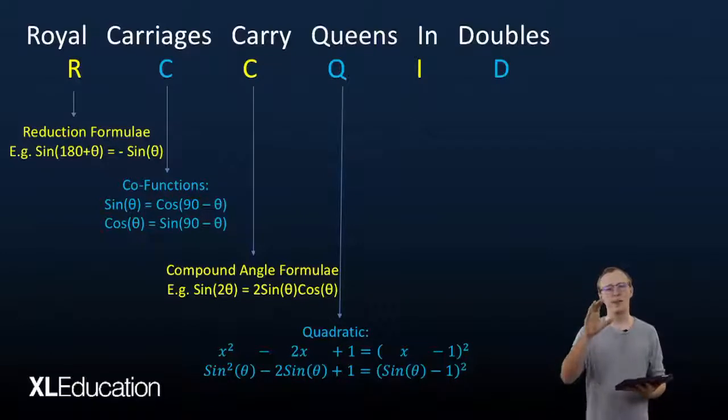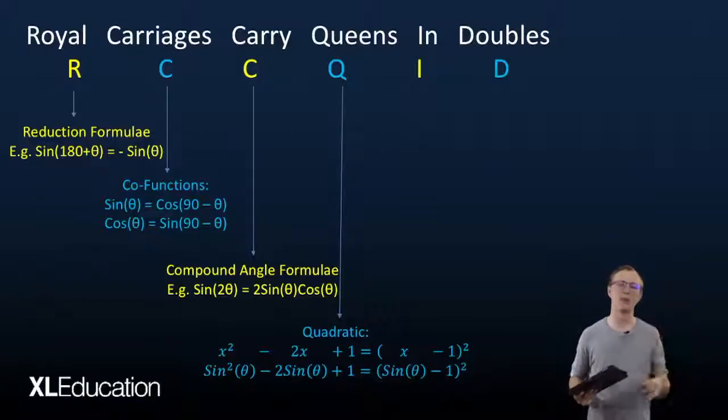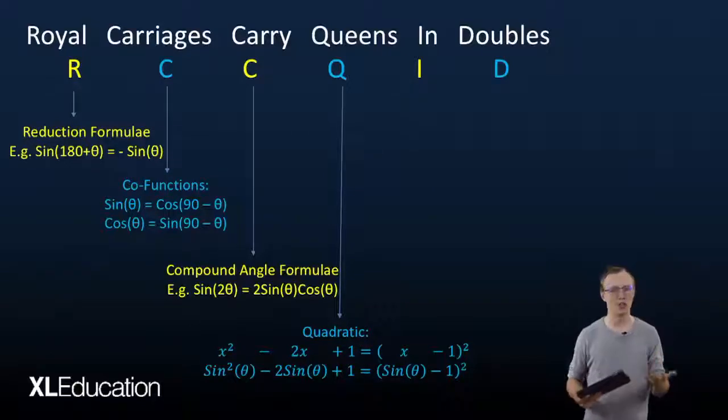Right, so often the x is replaced by a trig function like sine or cos, and that will be in the form of sin²(θ) + sin(θ) + 1 = 0. So that's exactly the same as a quadratic function, but instead of having x be the thing that's being squared, we now have sine which is being squared.